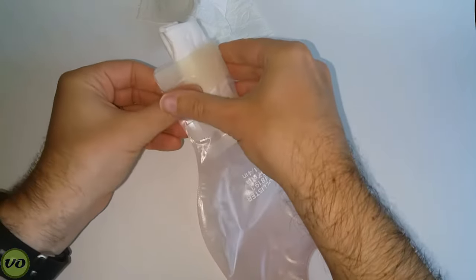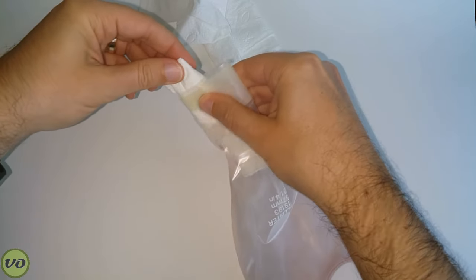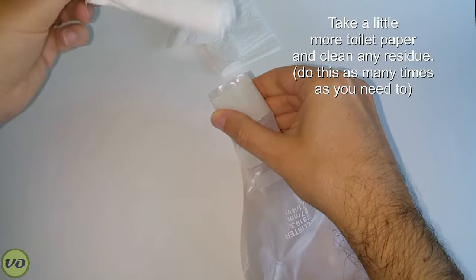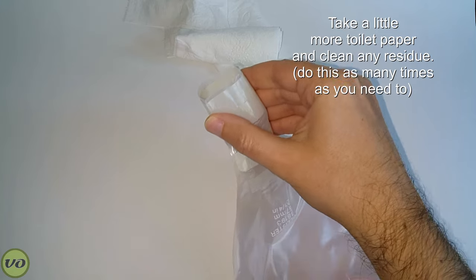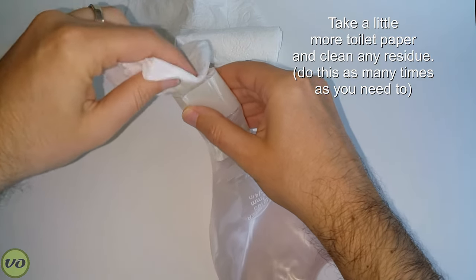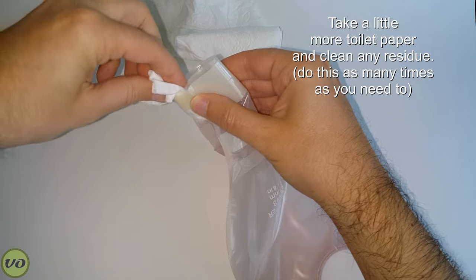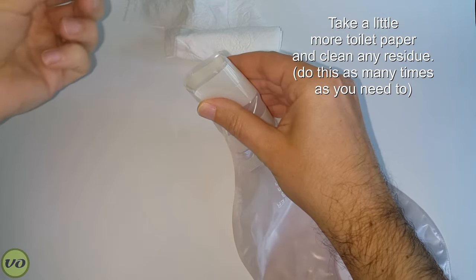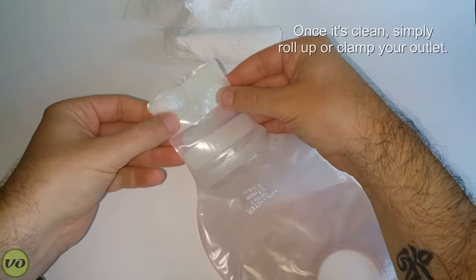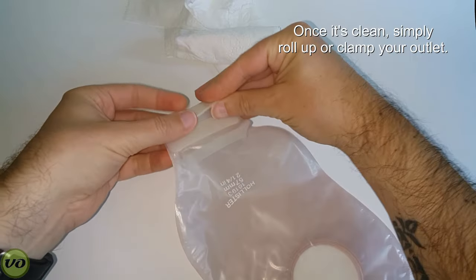So I just basically roll that around, I try to get as much as I can out of there, and usually one time is enough. Sometimes I may do it more than once, but I'll get another piece of toilet paper and I'll just pick up any of the residue that I might have left. And that's basically it, there's really nothing else left to do to clean it.